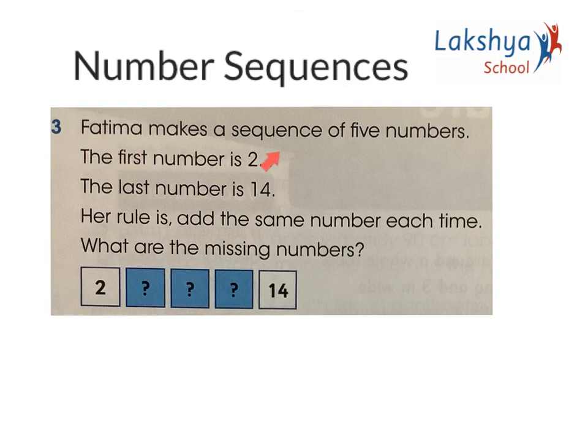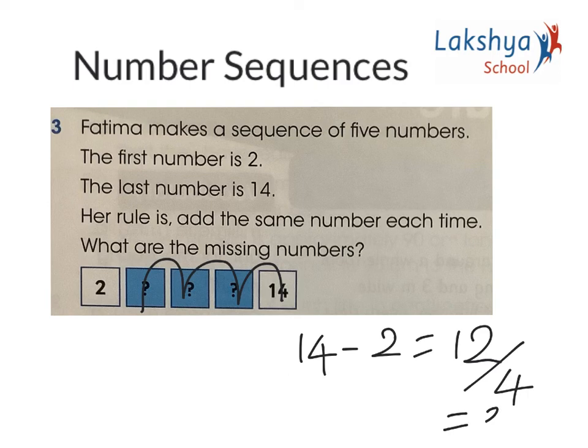Question 3: Fatima makes a sequence of 5 numbers. The first number is 2, the last number is 40. Her rule is add the same number each time. What are the missing numbers? We need to find the difference between the two numbers. The difference is 14 minus 2, which gives us 12. How many jumps from 2 to 14? It is 1, 2, 3, 4. Divide by 4, we get 3. So each time we jump by 3. The sequence is: 2, then 2 plus 3 is 5, 5 plus 3 is 8, 8 plus 3 is 11, and the last is 40.